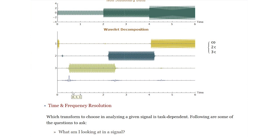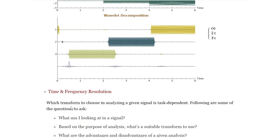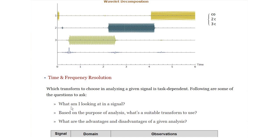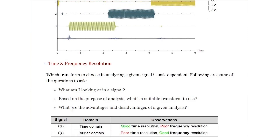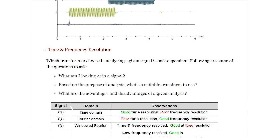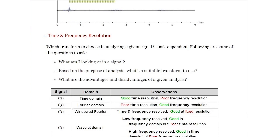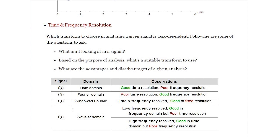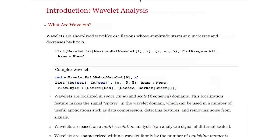This brings us to the time and frequency resolution analysis. Some fundamental questions one should ask when performing any time series analysis are: what kind of features are you looking for in a signal, and what is the purpose of the analysis? If you are interested only in the frequency component, then Fourier transform does the job most of the time. If instead you are interested in specific features that existed in a signal and at what amplitude and for what duration, then a wavelet transformation would be the way to go.